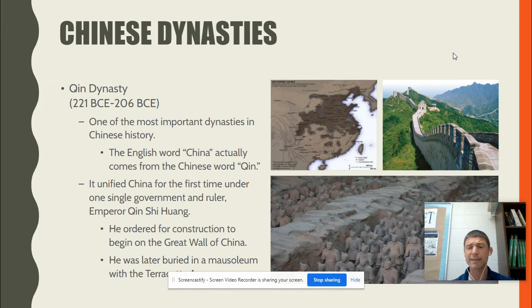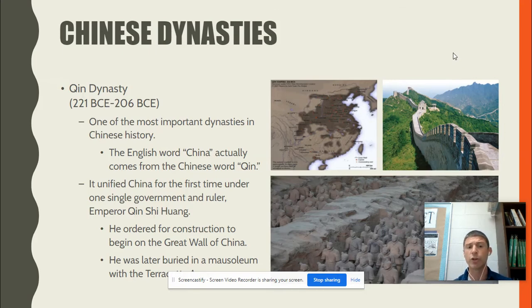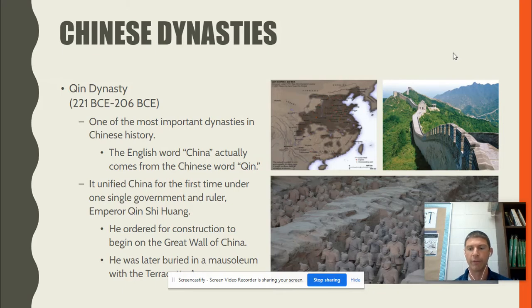The next dynasty is an important one — the Qin dynasty, Q-I-N, pronounced 'Chin.' That's actually where we get the name China from — it comes from this word Qin. It was the first to unify China under a single government. The emperor Qin Shi Huang brought all of the country together under one government. This is also when construction began on the Great Wall of China.